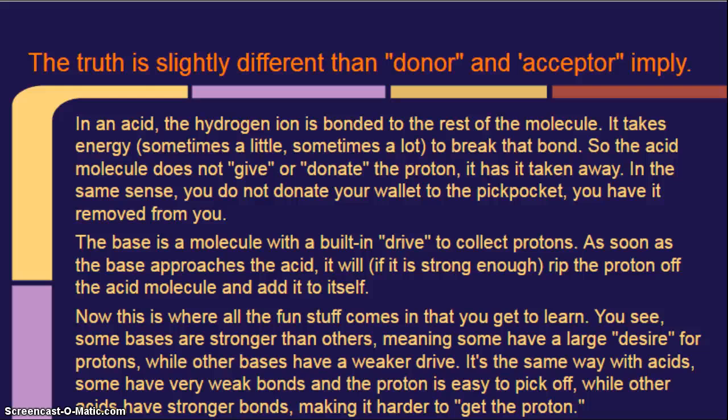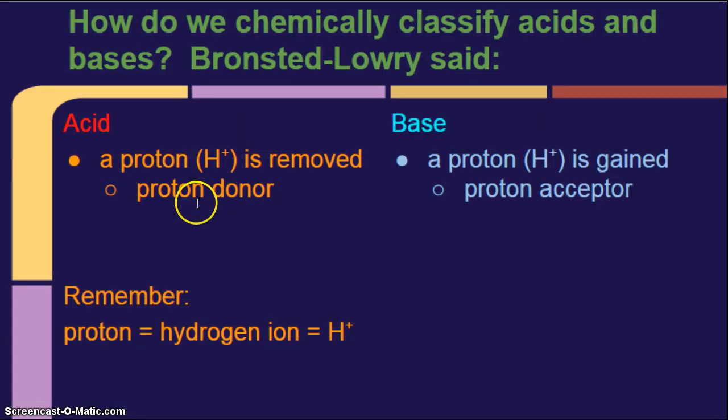So you can also think of the big, blue, bitter bases as the bad guy, right? It's stealing those protons. Now, this is where all the fun stuff comes in that you get to learn. You see, some bases are stronger than others, meaning some have a large desire for protons, while other bases have a weaker drive. It's the same way with acids. Some have very weak bonds, and the proton is easy to pick off, while other acids have stronger bonds, making it harder to get the proton. But, again, every textbook says it's a proton donor and proton acceptor.